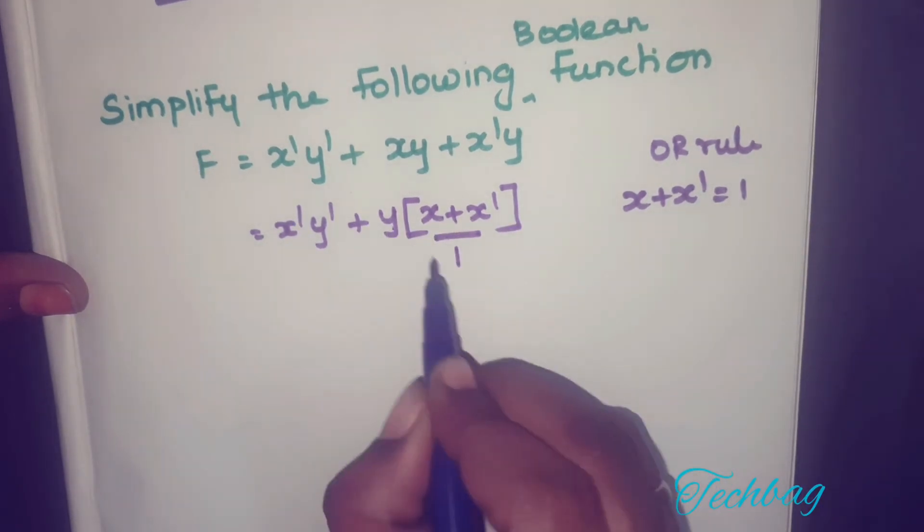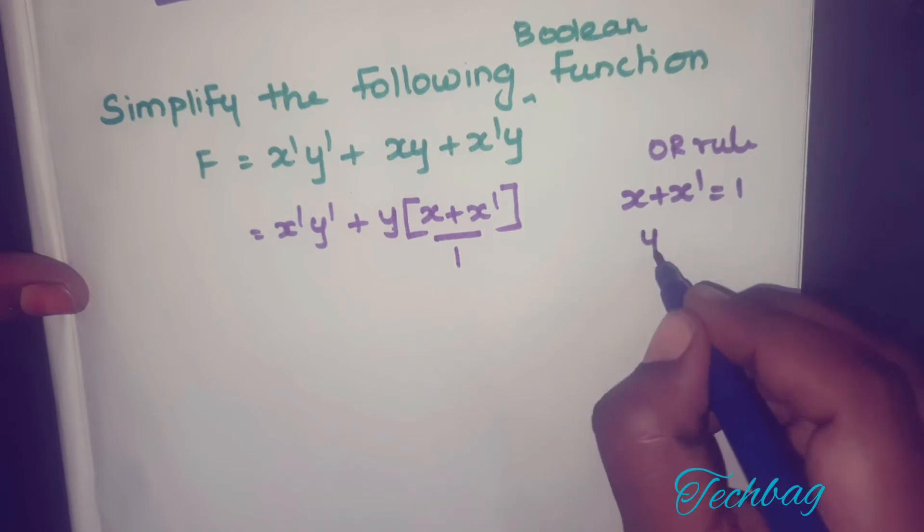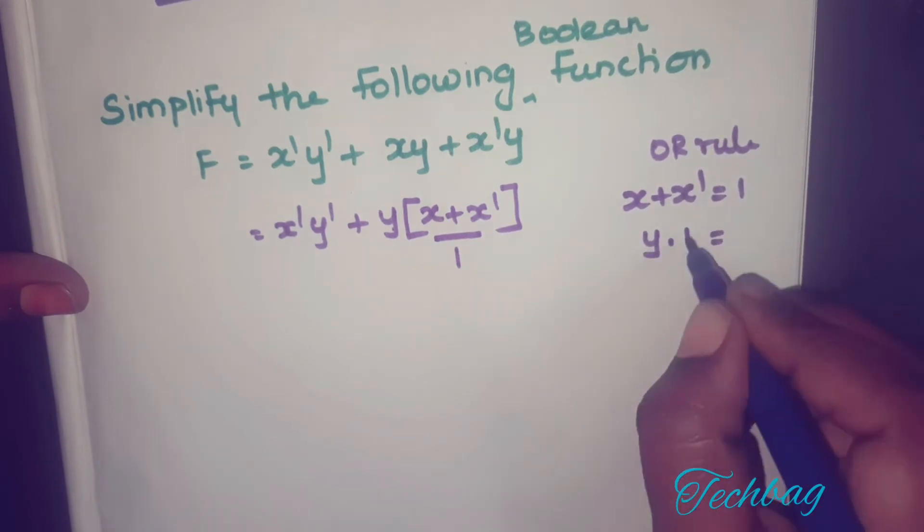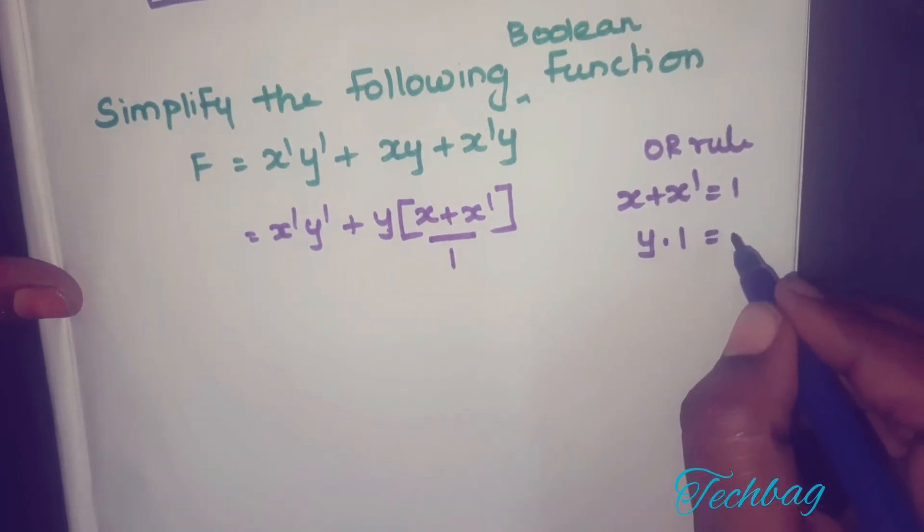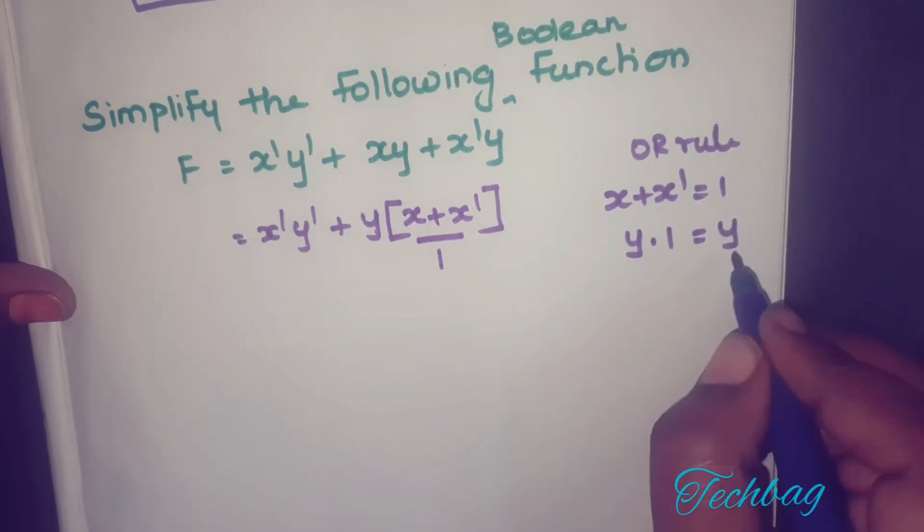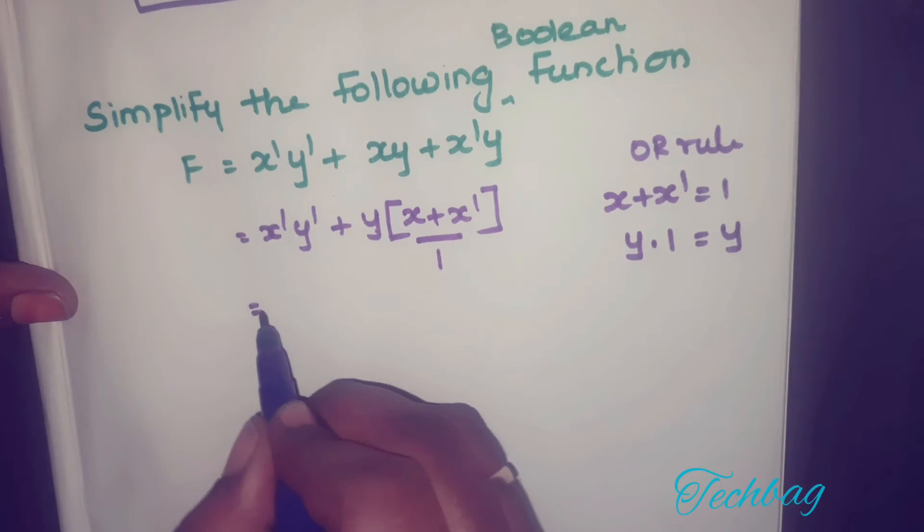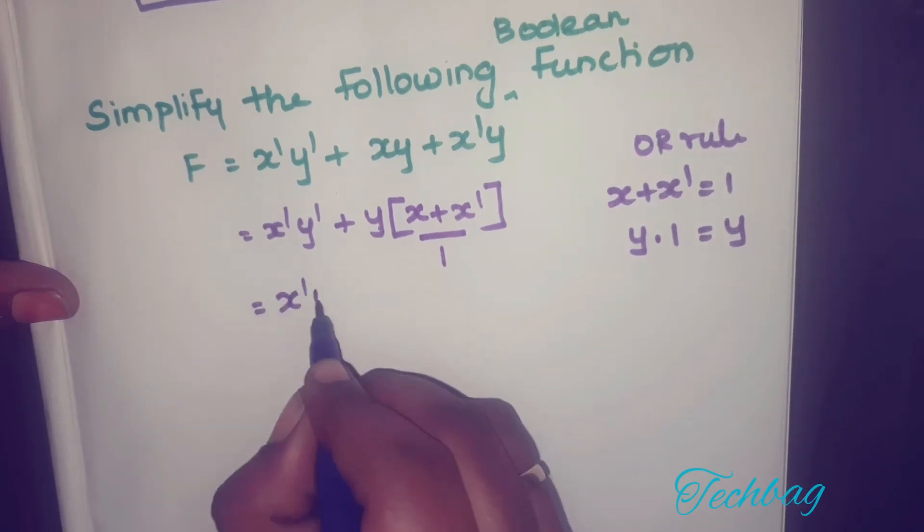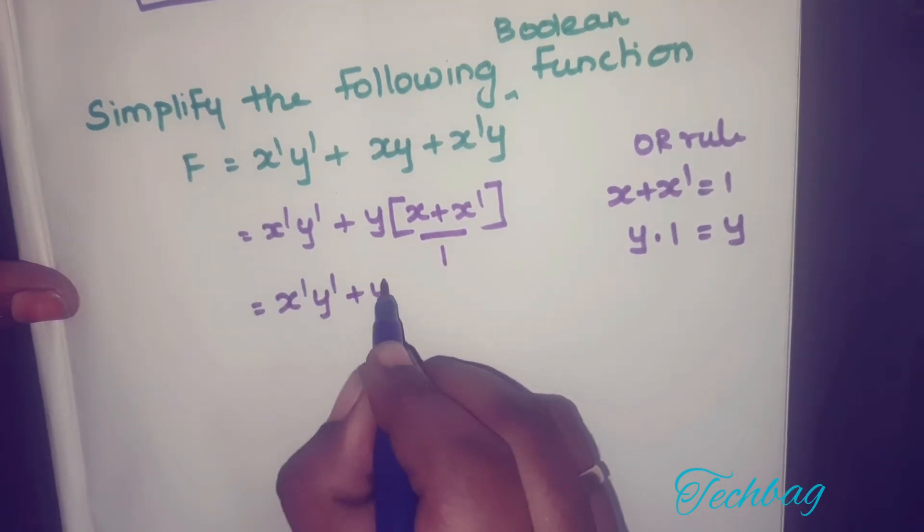Now you get y·1. We know that y·1 is equal to y. That is AND rule, one of the AND rules. So you get x'y' + y.